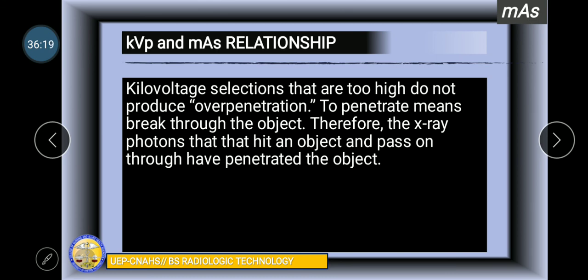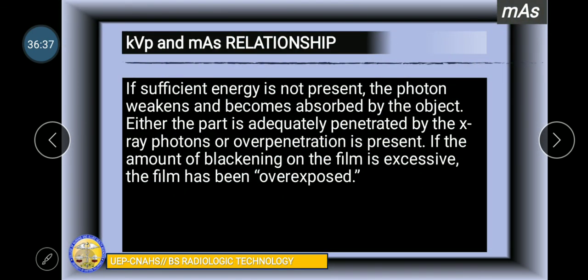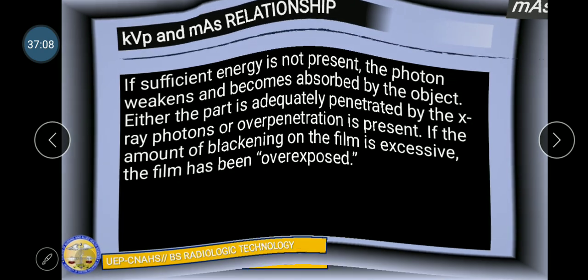When using these practical rules, it must be understood that increase in mAs do not result in increased penetration of the x-ray beam. Therefore, an increase in mAs cannot compensate for inadequate KVP selection. Kilovoltage selections that are too high do not produce overpenetration. To penetrate means break through the object. Therefore, x-ray photons that hit an object and pass through have penetrated the object. When your film is too much black, the term is overexposure.